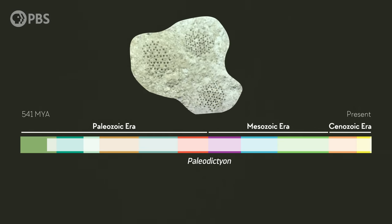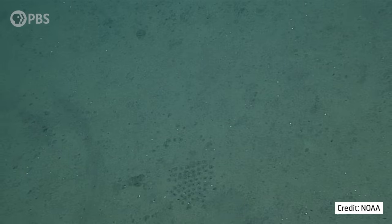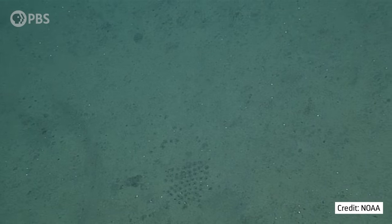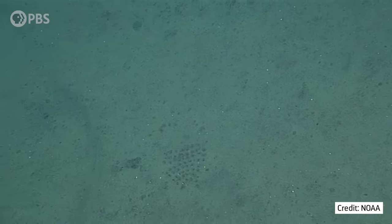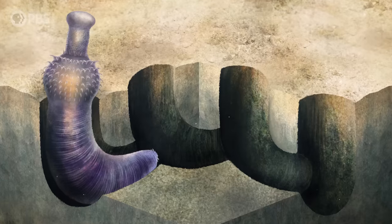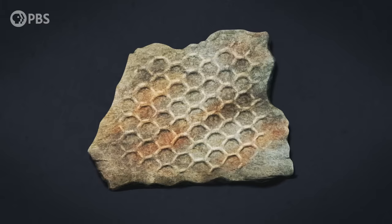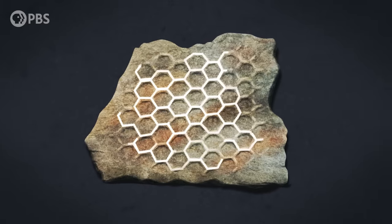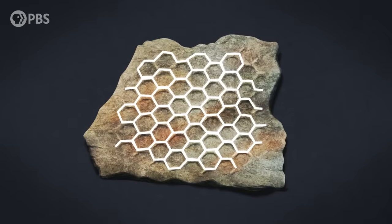So we know that paleodictyon has been hanging around with few changes for hundreds of millions of years. But that brings us back to the big question. What is this thing? With all these living and fossil specimens, surely the identity of paleodictyon would be easy to crack. Except not so much. Since the fossil was initially described in the 1850s, there have been a few different ideas about what it was created by. While worms are responsible for lots of similar fossilized tunnels, these hexagons have such sharp angles that it actually couldn't have been made by a burrowing organism. Cutting those precise corners at regular intervals would be nearly impossible.